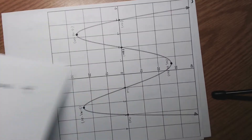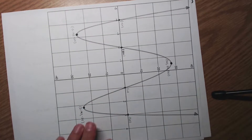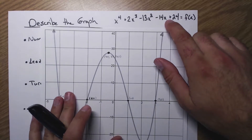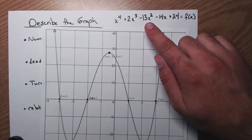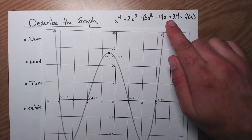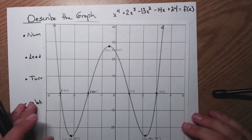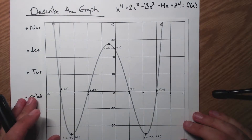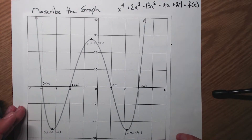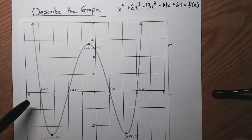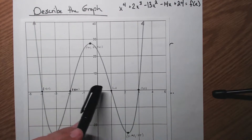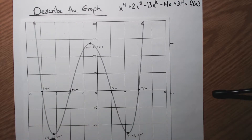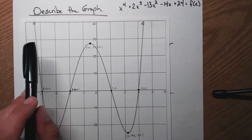Let's look at an example. Here's my function: x to the 4th minus 2x cubed minus 13x squared minus 14x plus 24. This is the picture it gives you. The important thing is to notice how many times you cross the x-axis, how many turns you have, and where the ends are going.